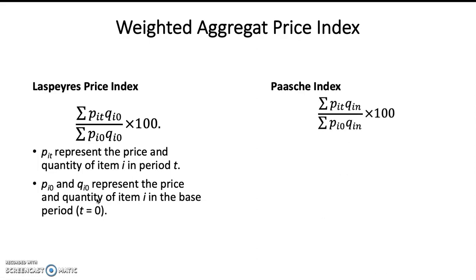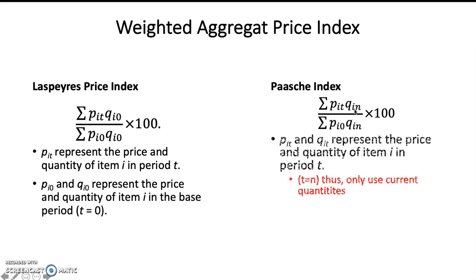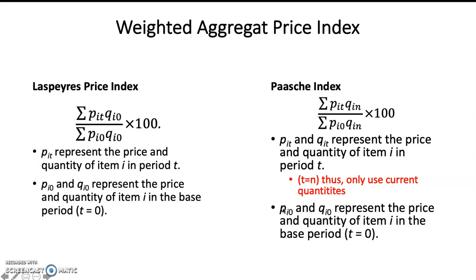The second is the Paasche Index. The Paasche Index uses the current quantity as the weight, shown here as QiN, where t equals n, meaning it uses only current quantities. PiT and QiT represent the price and quantity of item i in period t, and Pi0 and Qi0 represent the price and quantity in the base year.